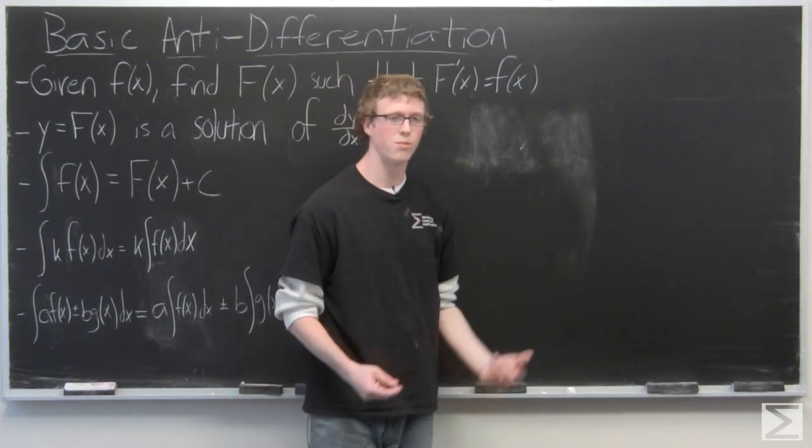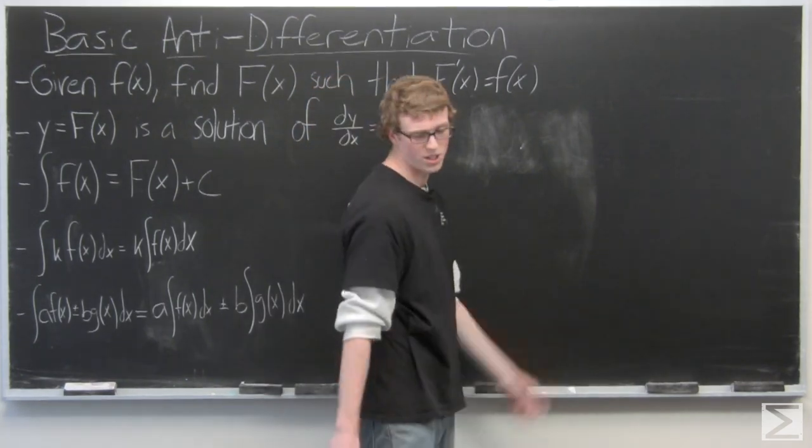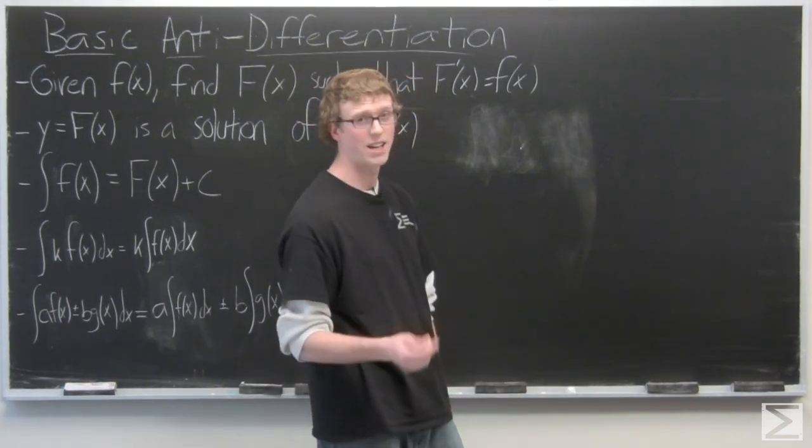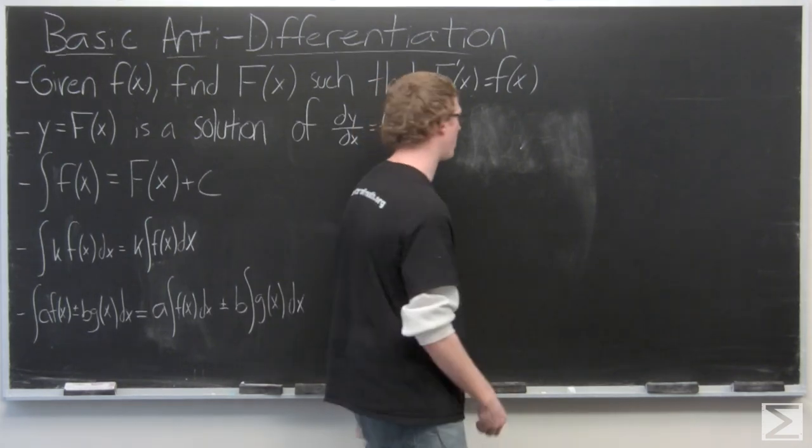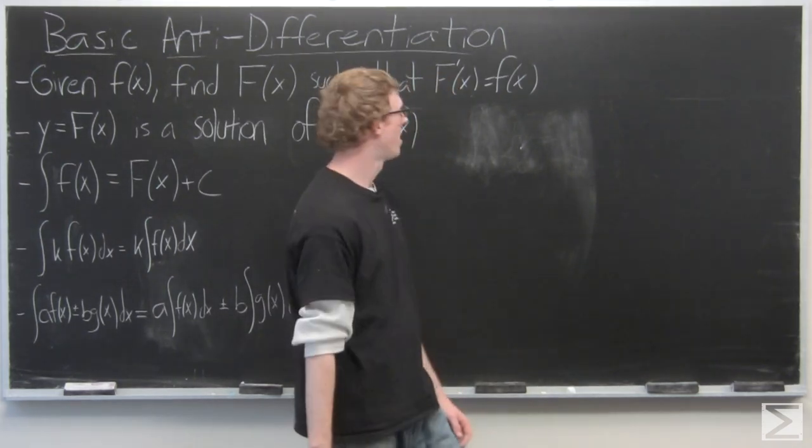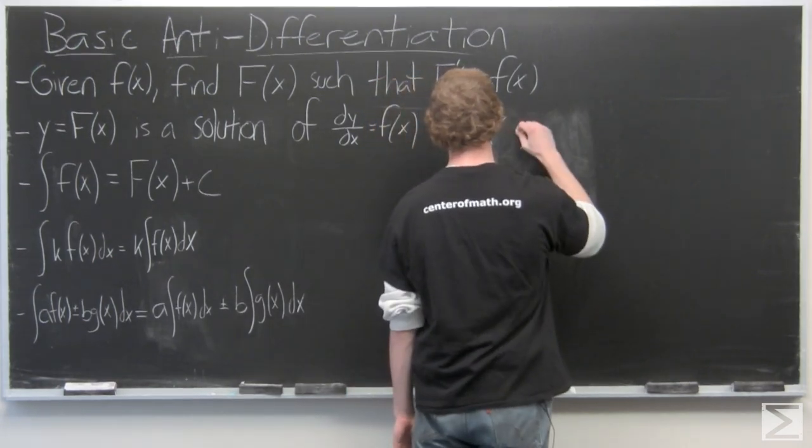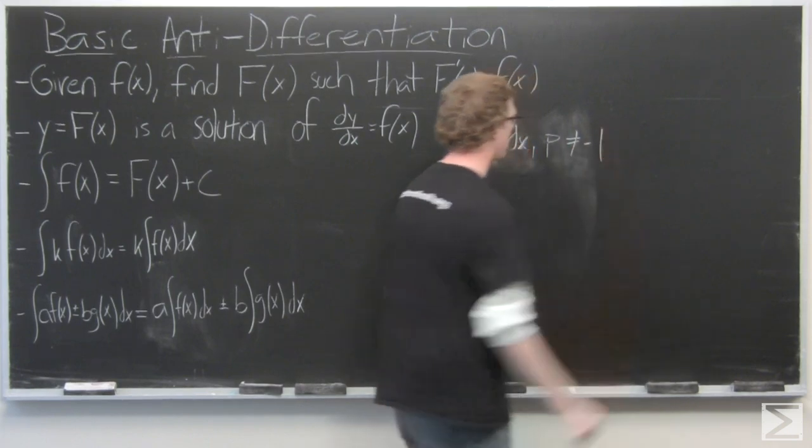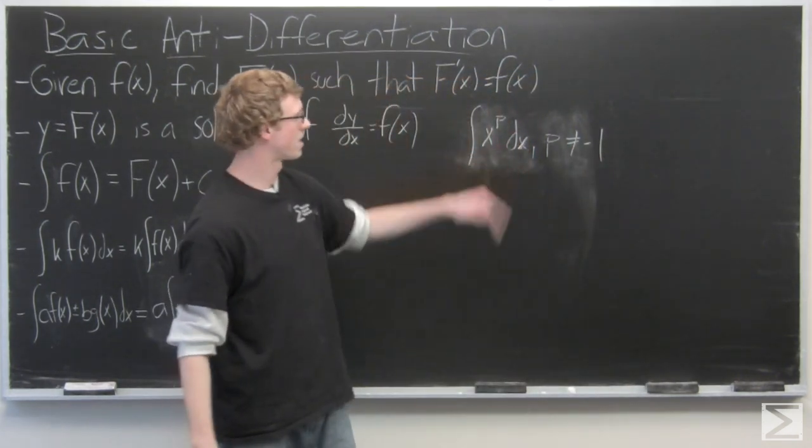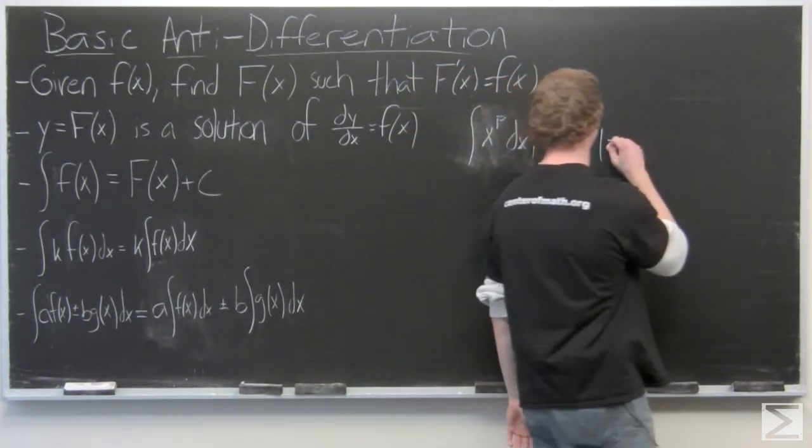Another rule we have for anti-differentiation is the power rule, which states that if we have a function x^p where p does not equal negative 1, and this is going to be very important in a second when we take a look at the negative 1 case. The integral of x^p dx, p does not equal negative 1, is just going to be this.